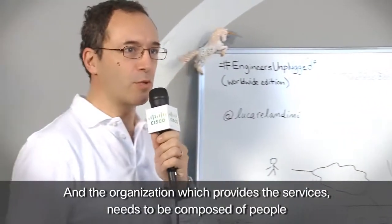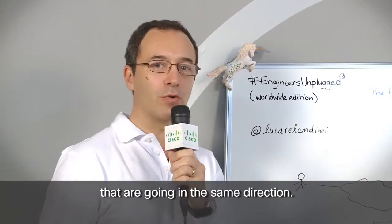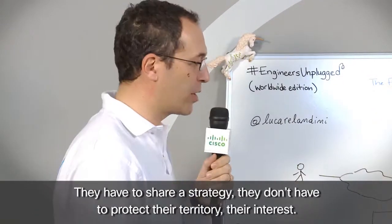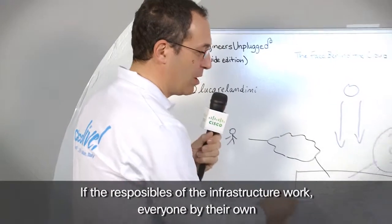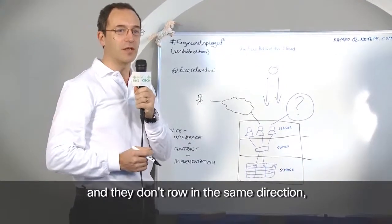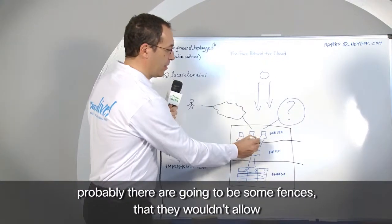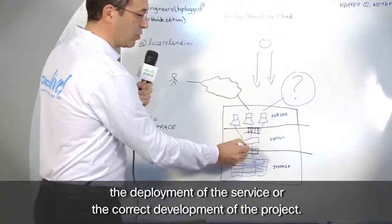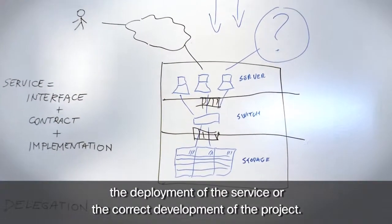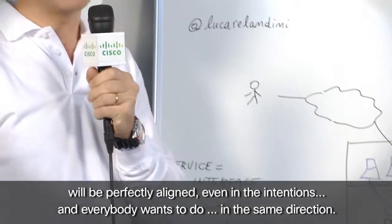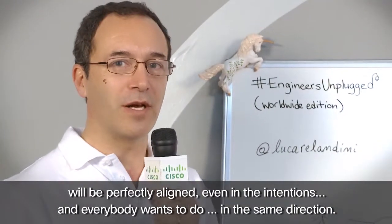The organization that builds services must be composed by people that go in the same direction. They must provide a strategy, they must protect their own territory and their own interests. If the infrastructure is responsible for the infrastructure, they cannot be in the same direction, they may not be in the same direction, which impede the construction of the service or the correct work of the project. So it is important that the organization is perfectly aligned with the intentions and that they want to go in the same direction.